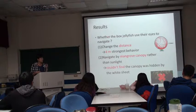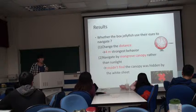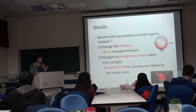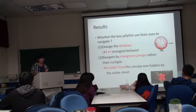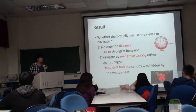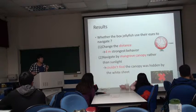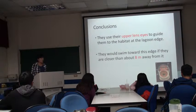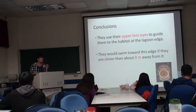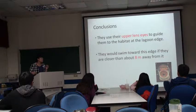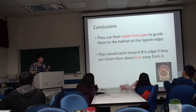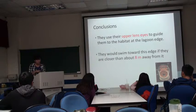Here are the results of the two experiments. In Experiment 1, changing the distance, the result is that Box Jellyfish showed the strongest directional behavior at 4 meters. In Experiment 2, navigating by mangrove canopy rather than sunlight, the result is that they could not find the canopy when it was hidden by the white sheet. My conclusion: first, they use their upper lens eyes to guide them toward their habitat at the canopy edge. Second, they swim toward this edge if they are closer than about 8 meters away from it.